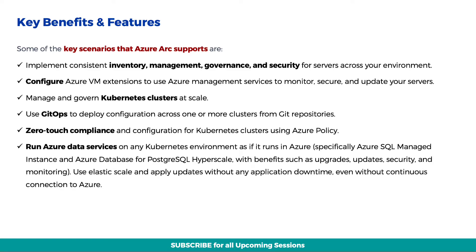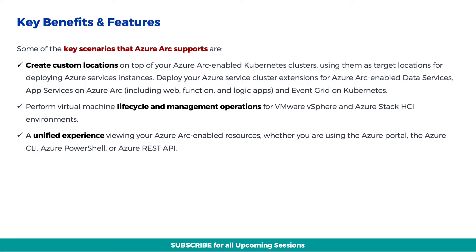Zero-touch compliance and configuration for Kubernetes clusters using Azure Policy. Run Azure Data Services on any Kubernetes environment as if it runs in Azure. Use Elastic Scale and apply updates without any application downtime, even without continuous connection to Azure. Create custom locations on top of your Azure Arc-enabled Kubernetes clusters, using them as target locations for deploying Azure service instances. Deploy your Azure service cluster extensions for Azure Arc-enabled data services, app services on Azure Arc, and Event Grid on Kubernetes.